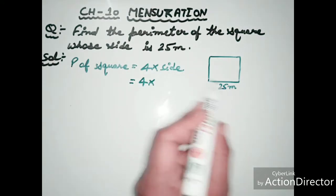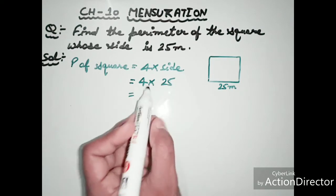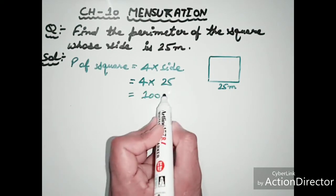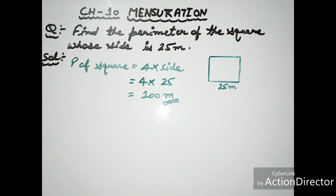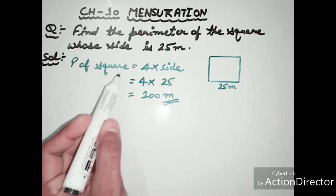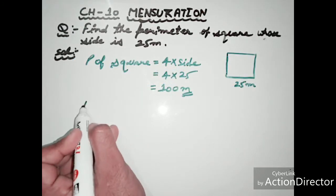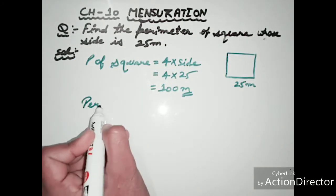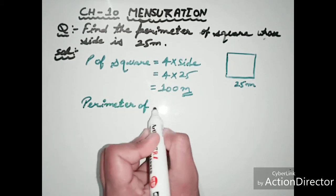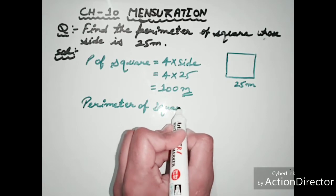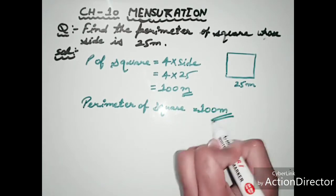We put the value of the side as 25 meters. So, 4 into 25 equals 100 meters. The perimeter of the square is 100 meters.